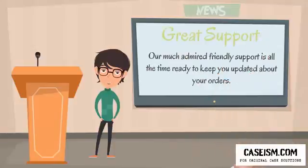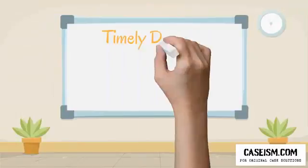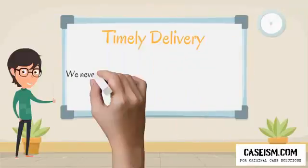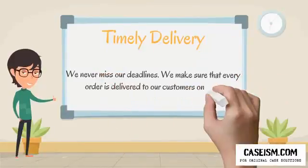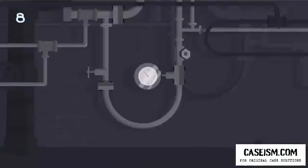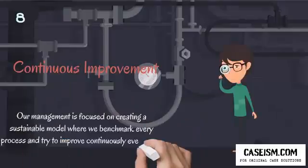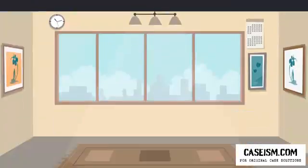It compares the output per unit derived against each input contributed. The value of output generated is deducted from the value of input generated in order to derive the economic value of productivity. It is also known as the earnings or profit generated from the overall production process.